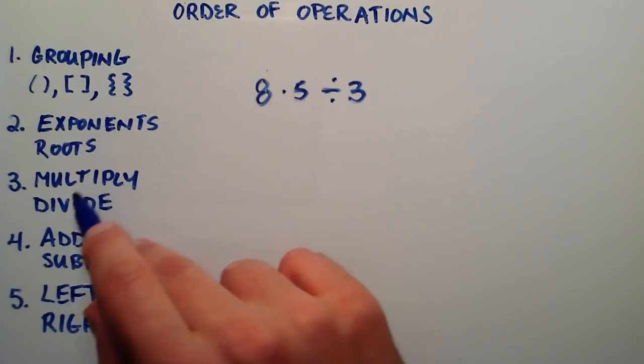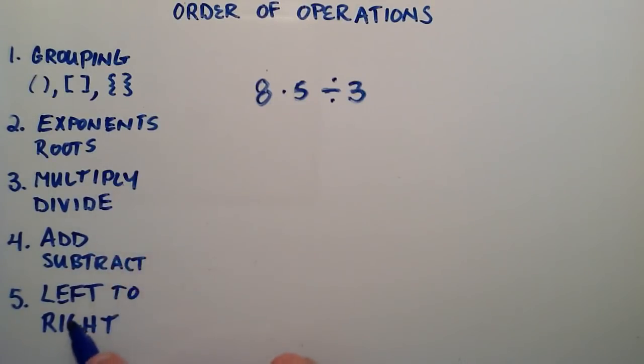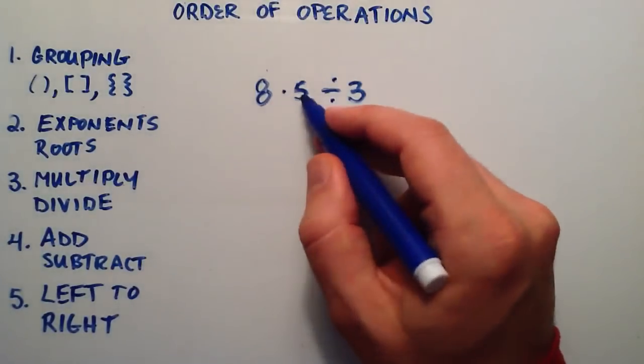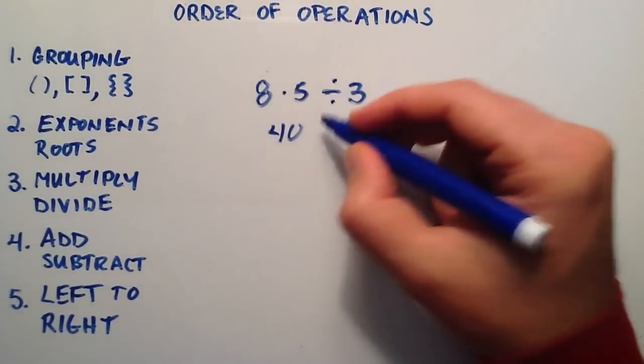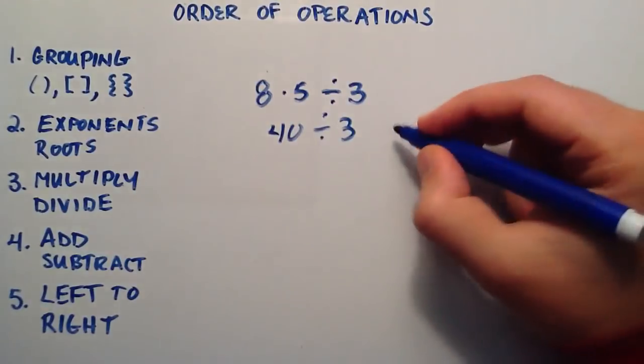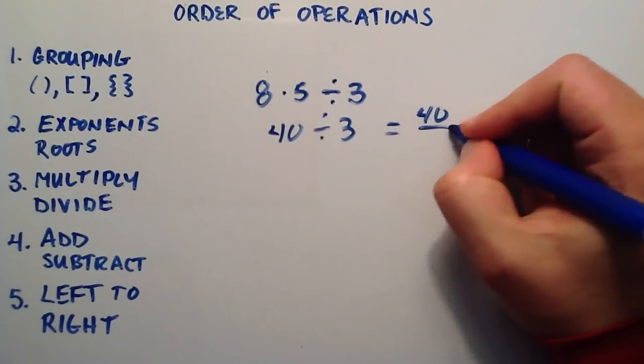So which one do we do first? Well, since they both have the same priority, then we fall down to number 5 here, and we do left to right. So this is going to be 8 times 5 is 40, and then that result divided by 3 gives us the fraction 40 over 3.